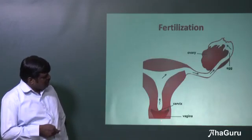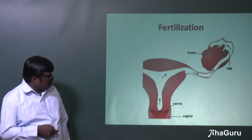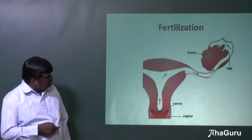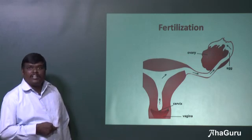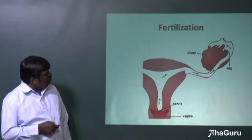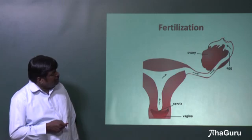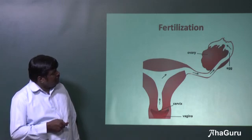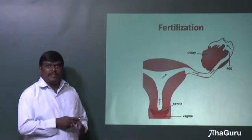This part is called the vagina, and the sperms are ejaculated into the vagina. These sperms have a tail structure, and with the help of the tail they locomote — they are motile, they can move inside. And mostly, they will meet the ovum in this tube, called the fallopian tube.